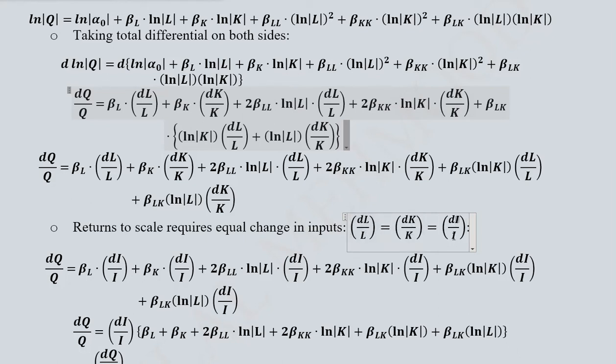So instead of labor and capital we are using i, that is generally speaking input. So wherever we have dL over L and dK over K we can write di over i. This is the first place. Instead of dL over L we have di over i and instead of dK over K we have di over i.